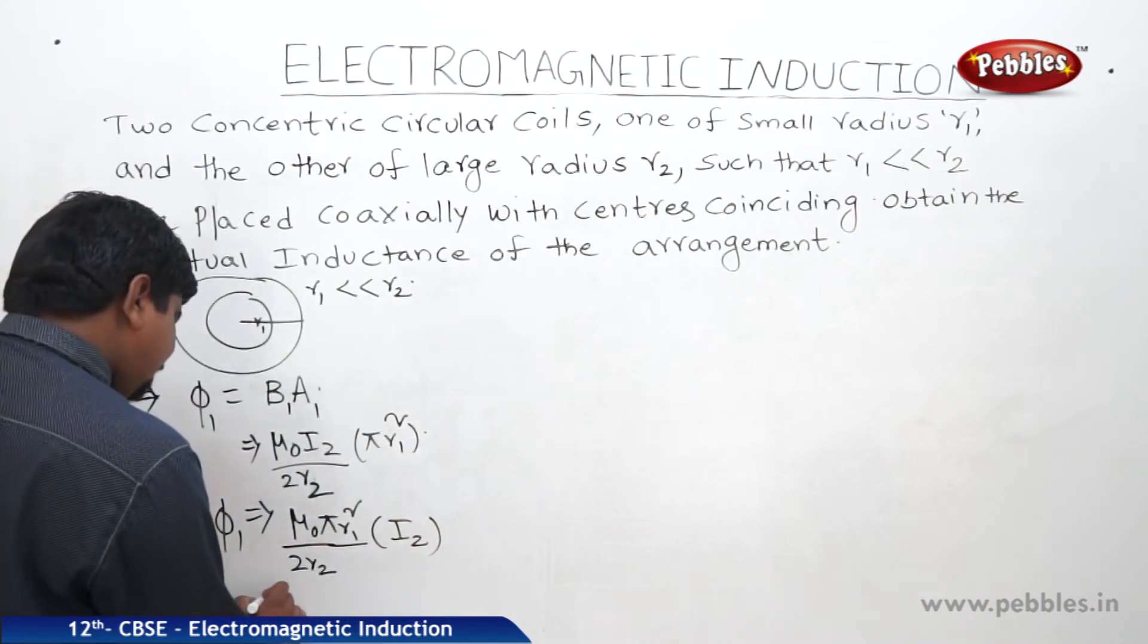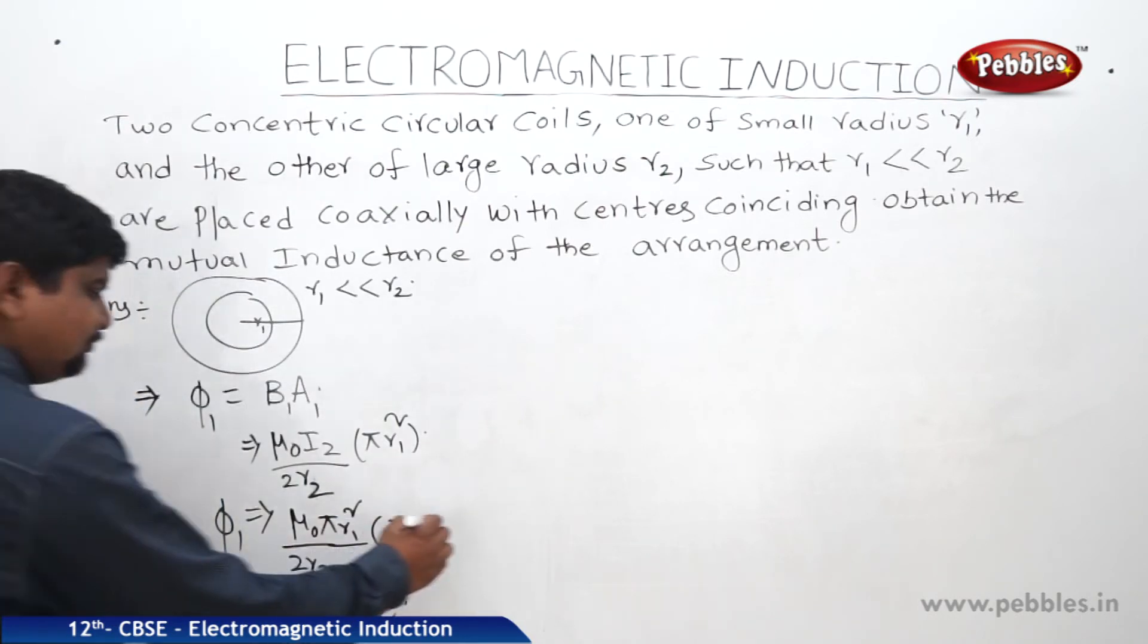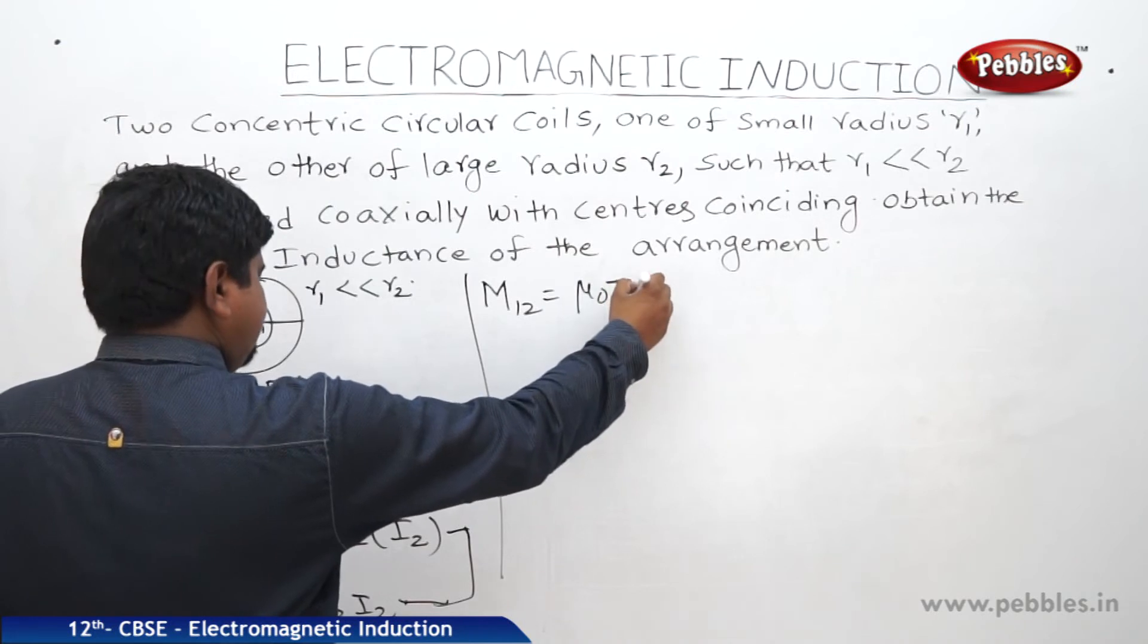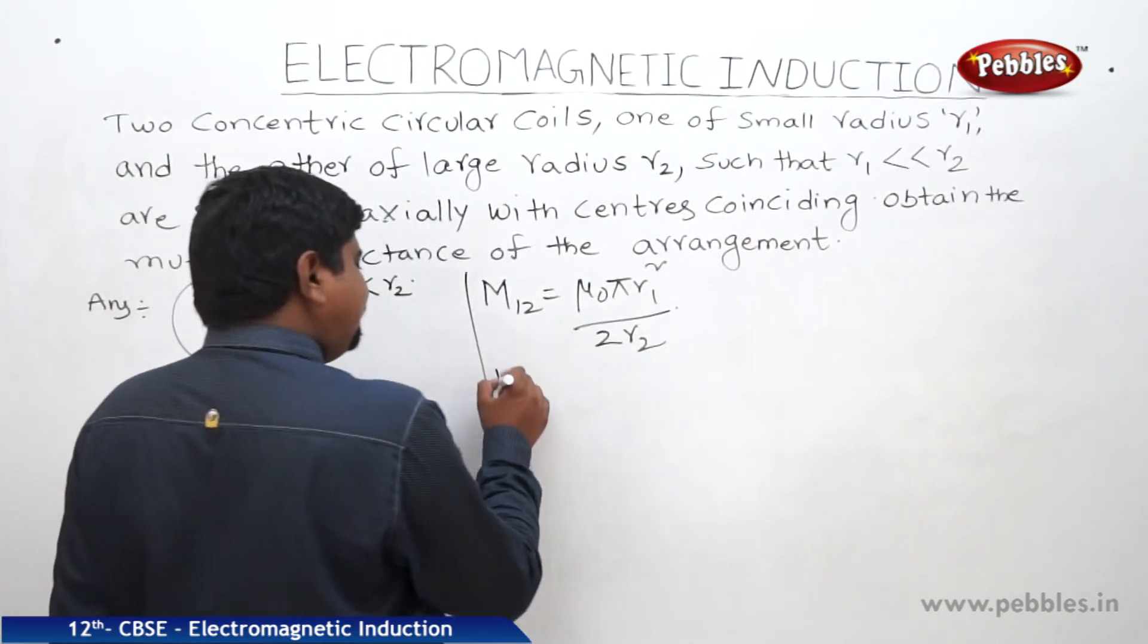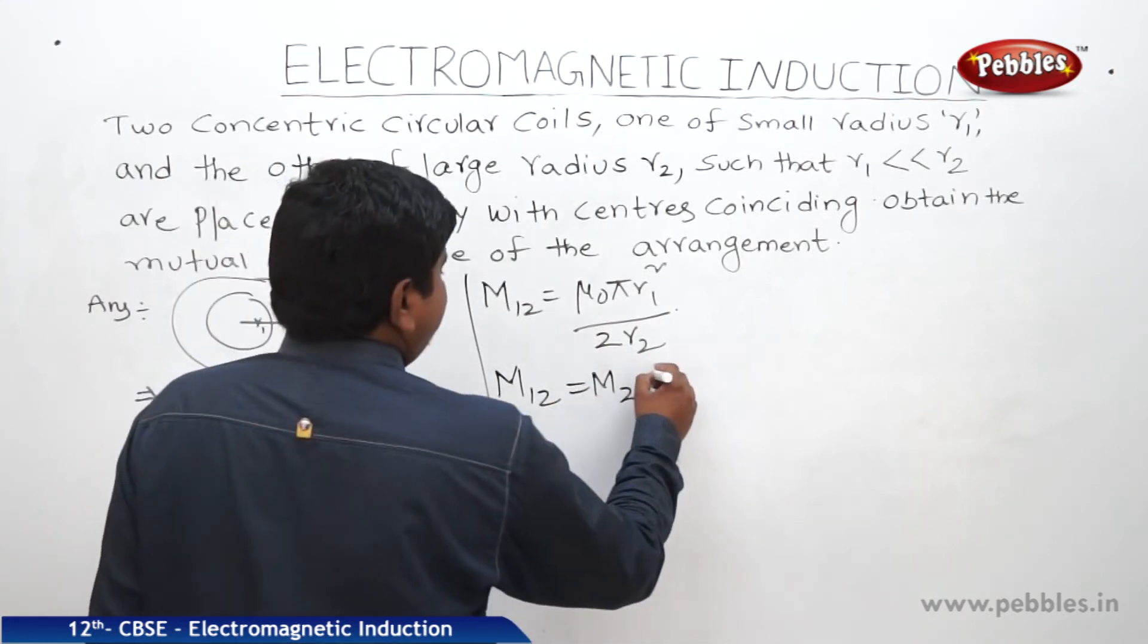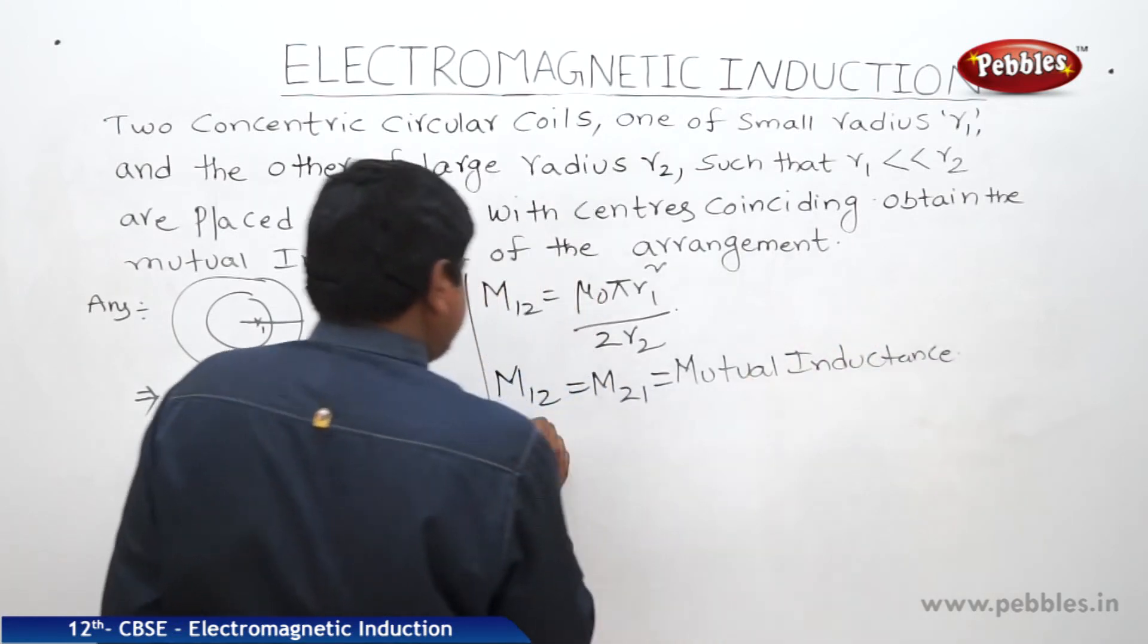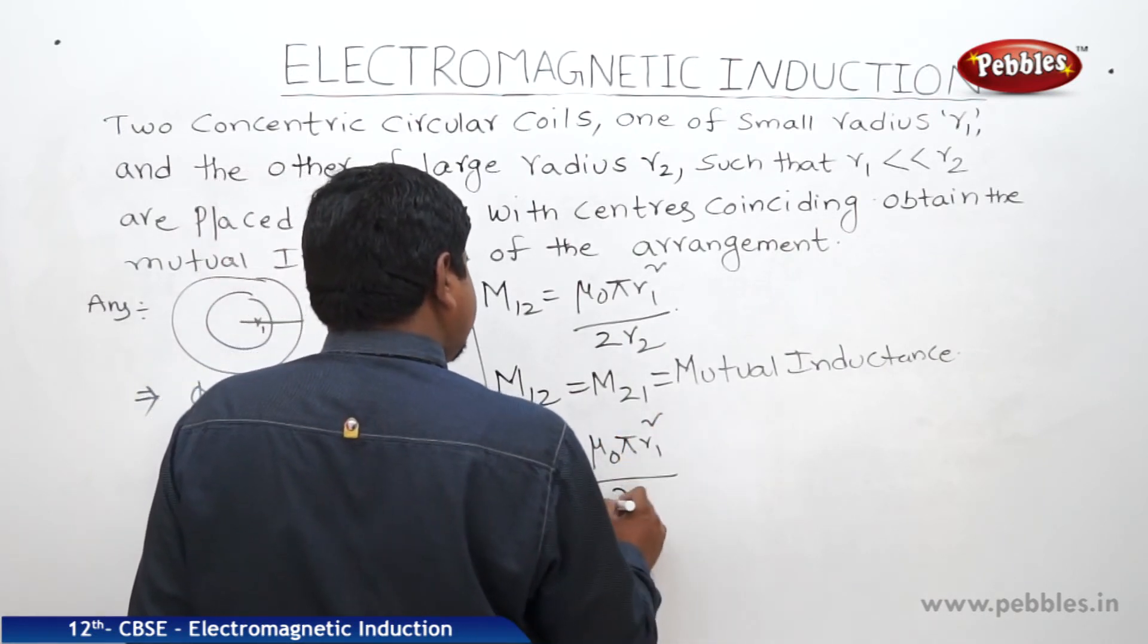So phi 1 is equal to what we can write for N number of turns. From this comparison we can write M12 is equal to mu 0 pi R1 square by 2 R2. According to the symmetry we can write that M12 is equal to M21. Therefore M12 is equal to M21 is equal to mutual inductance M is equal to mu 0 pi R1 square by 2 R2.